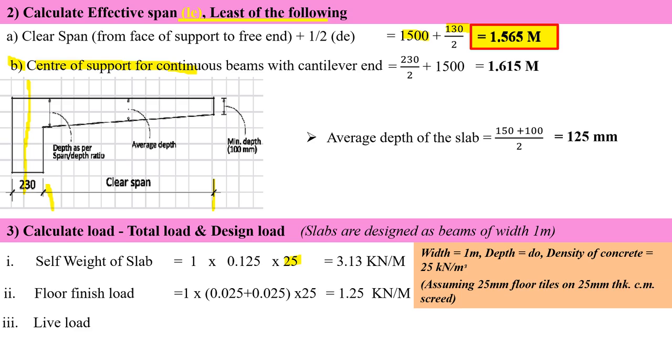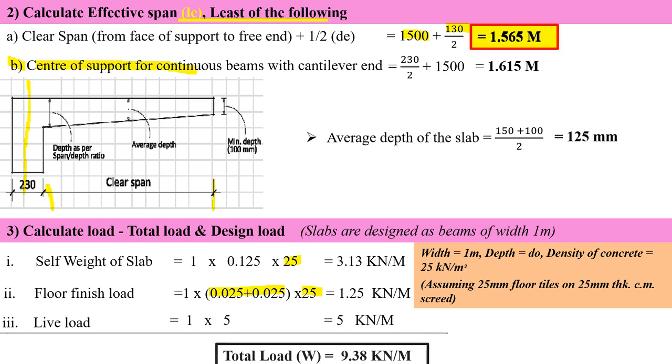Next is floor finish load. I have taken 25 mm floor plus 25 mm thickness of mortar screed, multiplied by density of concrete, 25. Live load is 5 because it's a balcony. Adding all three types of load, I'm getting 9.38 kN per meter.